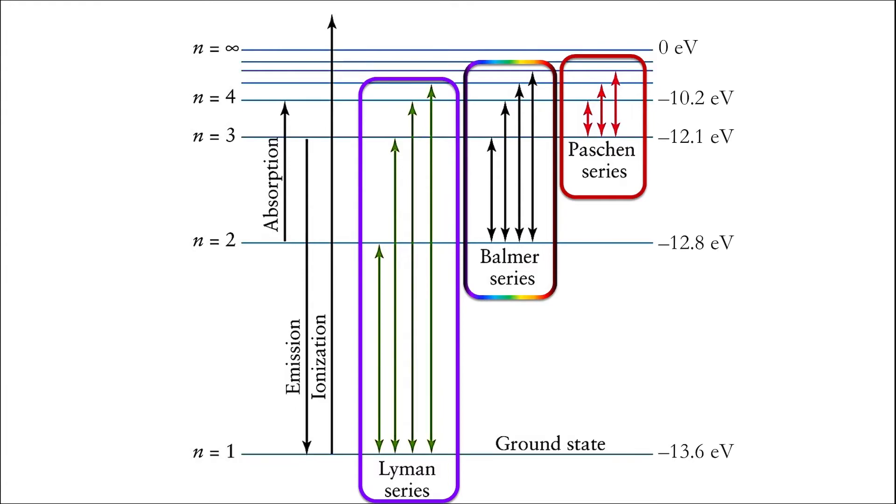Photons emitted or absorbed in the Lyman transitions will have ultraviolet wavelengths, since these transitions are quite large, requiring a lot of energy. Photons emitted or absorbed in the Paschen series will have infrared wavelengths, since these transitions are quite small, requiring significantly less energy than either the Lyman or Balmer series.